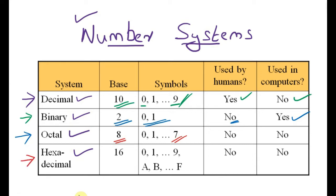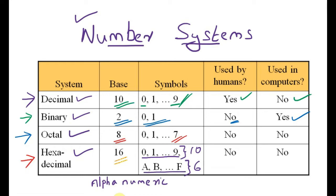Finally, we have the hexadecimal number system. In the case of the hexadecimal number system, we have 16 symbols, which means the base is 16. The hexadecimal number system is alphanumeric in nature — it contains both alphabets and numerics. It contains 10 numeric symbols from 0 to 9, and 6 alphabets: A, B, C, D, E, and F. So 10 numeric symbols plus 6 alphabets gives a total of 16, and the base is 16.